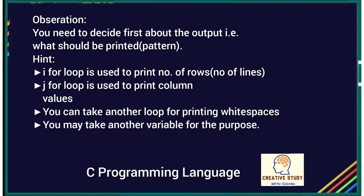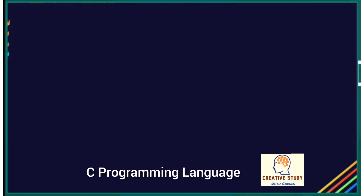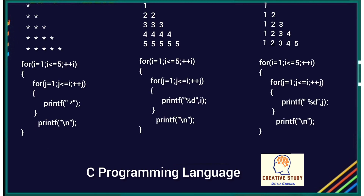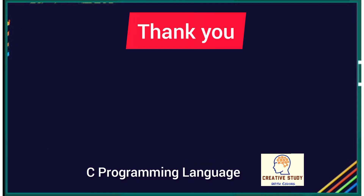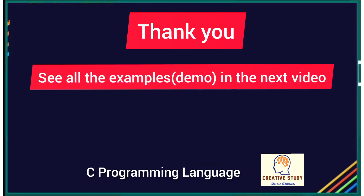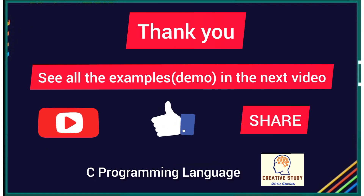You need to decide first about the output pattern. You can take help from the hints given: in the first pattern we print a star, in the second pattern we print the value of i, and in the third pattern we print the value of j. Thank you so much for watching the video. Keep watching such valuable videos, see all the examples in the next video, do subscribe to the channel, like and comment, and share it so that your friends can also learn.